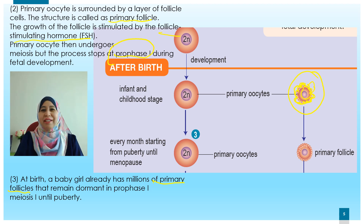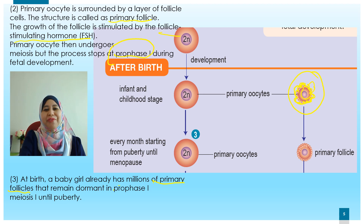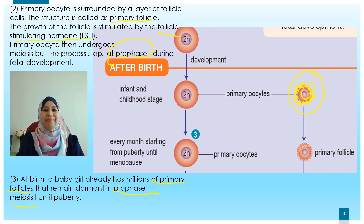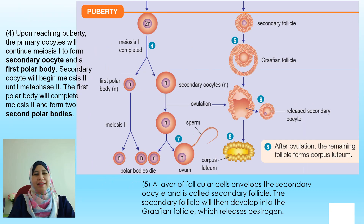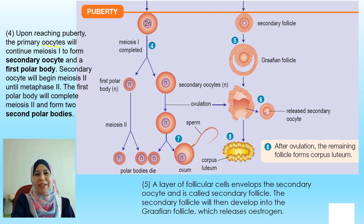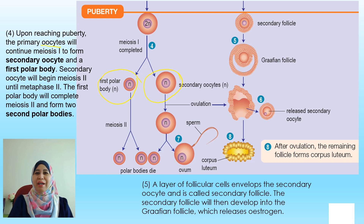These primary follicles don't do anything — they stay there, arrested in meiosis 1, waiting for the girl to reach puberty. When the girl reaches puberty, the primary oocyte will continue meiosis 1 to form the secondary oocyte and the first polar body.